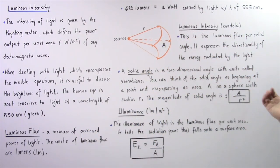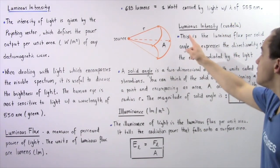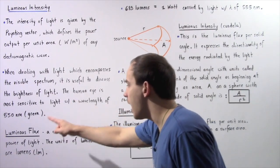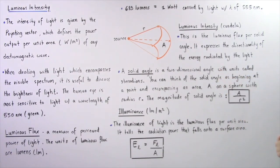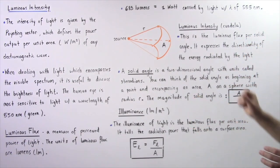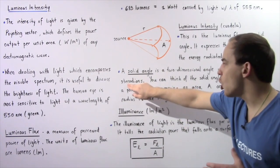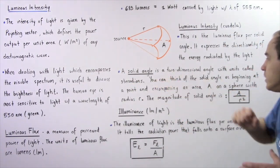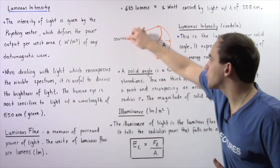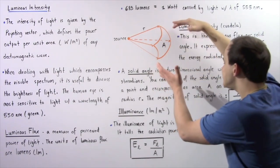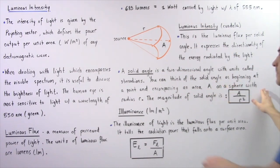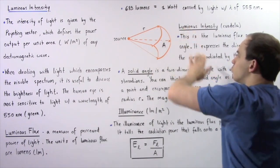The second quantity that helps us describe the brightness of light is luminous intensity. Luminous intensity has units known as candela. It is the luminous flux per solid angle, and it expresses the directionality of the energy radiated by the light wave. A solid angle is a two-dimensional angle defined using units known as steradians. You can think of the solid angle as beginning at a certain point source and encompassing an area A on a sphere with radius R, as described in the following diagram.